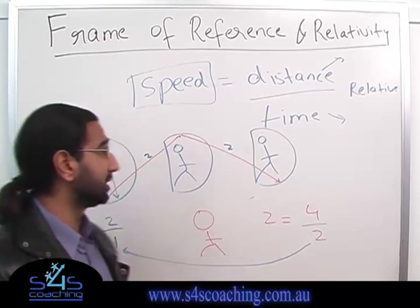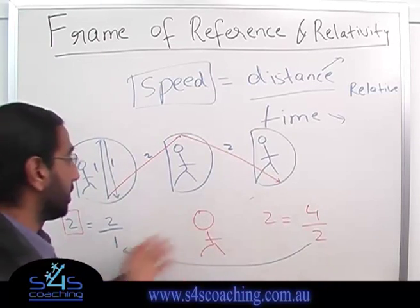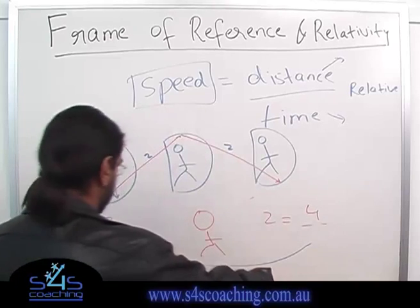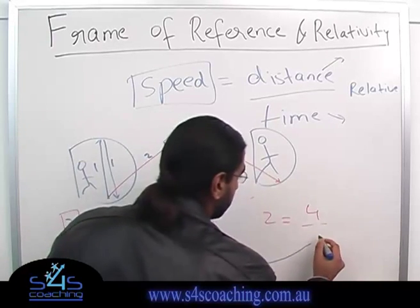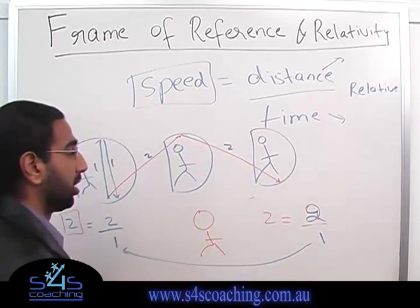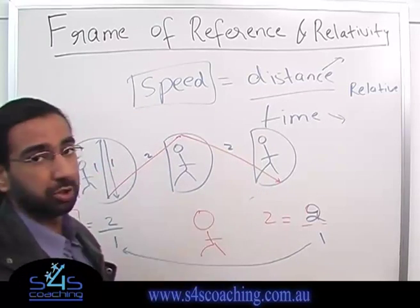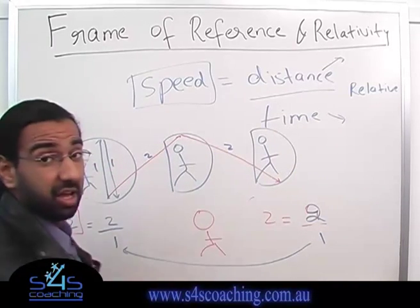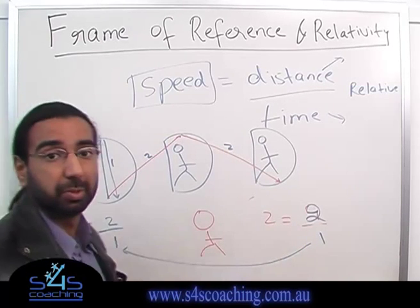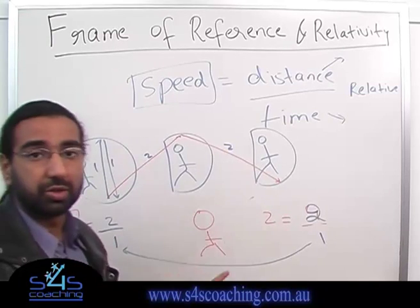The other thing that can actually happen is length can contract. To make this equation still hold, the other thing I could do was keep the time the same, and somehow this distance instead of being 4, this distance is actually still 2 because the length is just contracted. If I do that, I can still keep the time the same and I still get the same speeds. So the other thing you can have is length contraction.